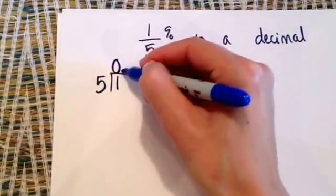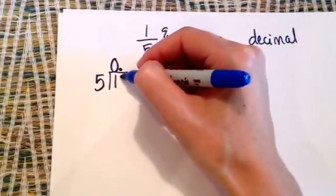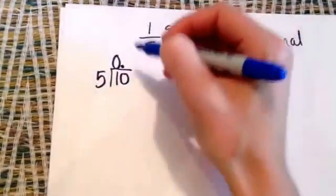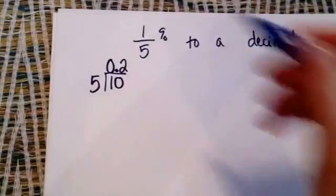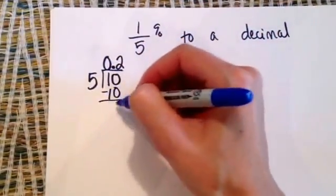I'm going to put 1 inside the house, 5 on the outside. 1 can't be divided by 5, but 10 can be divided by 5 two times. So 2 times 5 is 10, I subtract, I get 0.